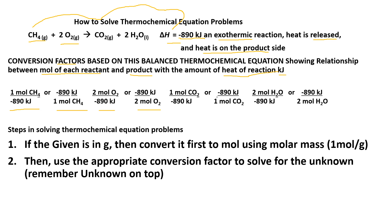Another relationship is CO2: 1 mole of CO2 over negative 890 kilojoules, or negative 890 kilojoules over 1 mole of CO2. As you learned in stoichiometry, the unit on top is the unknown and the unit in the denominator is the unit of the given. Similarly, 2 moles of H2O over negative 890 kilojoules, or negative 890 kilojoules over 2 moles of H2O.